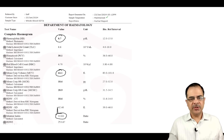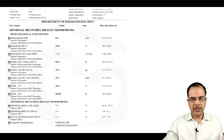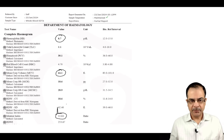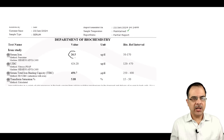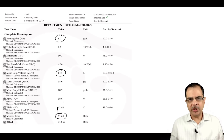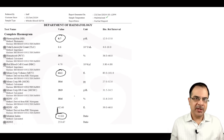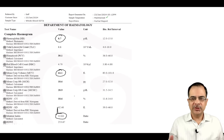Next case: hemoglobin is 8.7, MCV 16.1, and Mentzer Index is 13.64 — suggesting thalassemia. However, iron studies showed low iron and low percentage saturation, pointing to iron deficiency instead. This illustrates that the index does not always give the exact picture. When iron studies are available, they are more reliable. This patient likely has iron deficiency predominating over thalassemia.